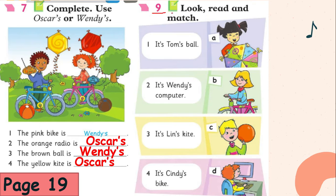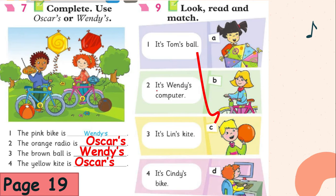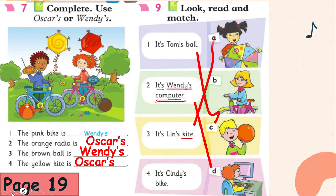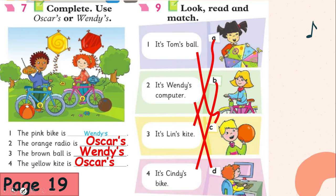Let's go to activity 9 — look, read, and match. We're going to match numbers to letters. It's Tom's ball — we look for a picture of a ball; that's in letter C. Number two: It's Wendy's computer — that's in letter D. Number three: It's Lynn's kite — the person holding a kite is in letter A. Number four: It's Cindy's bike — the person holding a bike is in letter B. That's the answer for page 19.